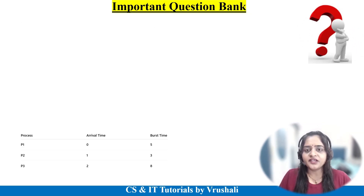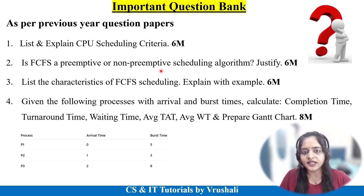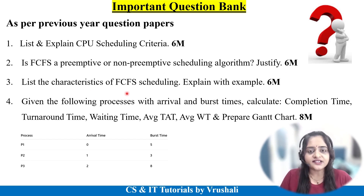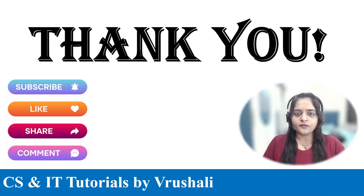As per previous year question papers, the most important questions include: list and explain CPU scheduling criteria like pre-emptive and non-pre-emptive techniques (6 marks); whether FCFS is pre-emptive or non-pre-emptive and justify (6 marks); characteristics of FCFS with example; and a numerical problem where arrival time and burst time are given and you must find completion time, turnaround time, waiting time, average turnaround time, average waiting time, and draw the Gantt chart (8 marks). Prepare accordingly. All the best and stay tuned for the next video. Thank you.